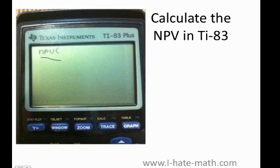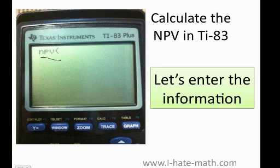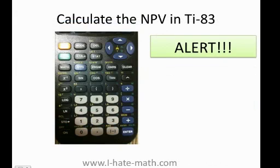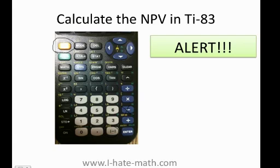You're going to get something like this. Now we need to enter the information. Very important: we're going to have negative numbers, so you need to use this negative key — do not use the other negative key, or the calculator is going to say you made a mistake. Also, there is a part where we're going to use what are called curly braces. To get that key, click the Second key, then where the parenthesis is — you can see the curly braces there. Make sure you know that and make sure you use the correct negative key.